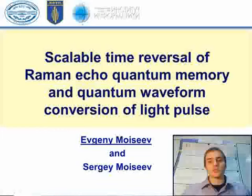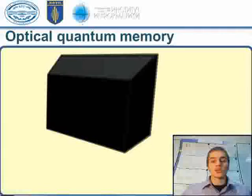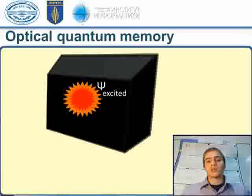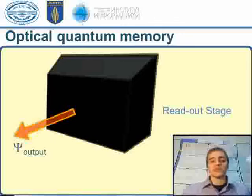Here we present a generalized scheme of such quantum memory, which provides scalable time-reversibility of light-atom interaction. The studied optical quantum memory device can be described as a black box. It takes an arbitrary input quantum state of light into the excited atomic coherences on the writing stage, and then this state can be retrieved on demand by some manipulation with the atomic system.